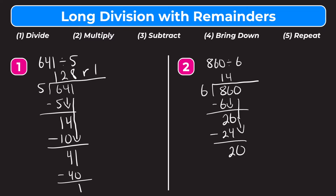Step 5 is repeat. How many whole groups of 6 go into 20? That's going to be 3. Then we multiply: 3 times 6 is 18. Step 3 is subtract: 20 minus 18 is 2. Our next step would be bring down, but we've gone all the way to the right in our dividend and there are no more digits, so 2 is going to be our remainder — we write that R2. So 860 divided by 6 equals 143 remainder 2. That means 6 goes into 860 143 times and there's 2 left over, because 143 times 6 equals 858, and 860 minus 858 is 2.